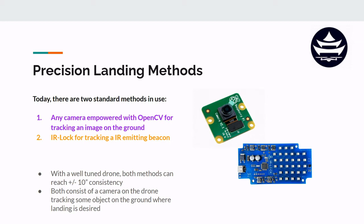Let's cover the two main precision landing methods that are currently being done. The first method, shown in purple, is any camera empowered with OpenCV for tracking an image on the ground — it's a very simple, cheap method, but there are some drawbacks. The second method is IR Lock for tracking an IR-emitting beacon on the ground, which is more of a plug-and-play application. Either method, with a well-tuned drone, should achieve sub-10-inch consistency for landing on a desired target, and both involve a camera on the drone tracking some object on the ground.